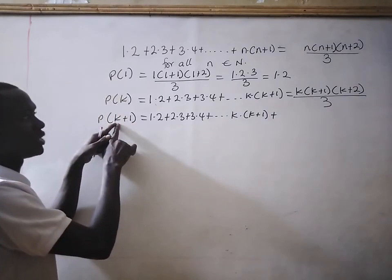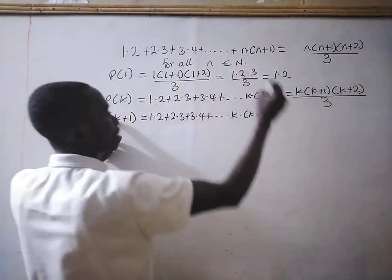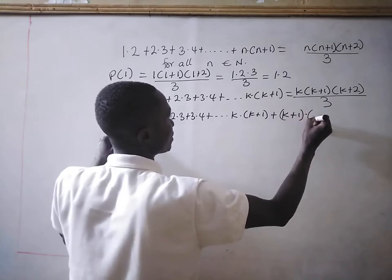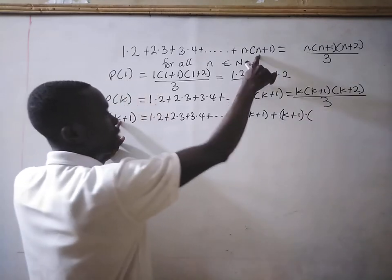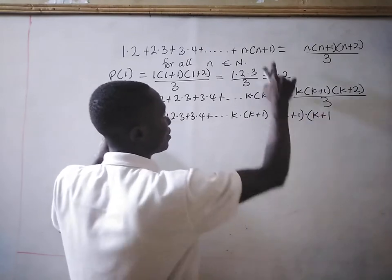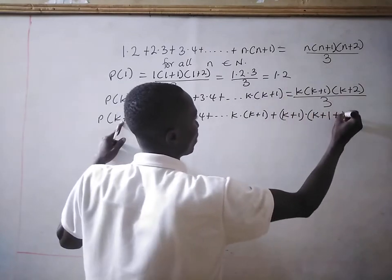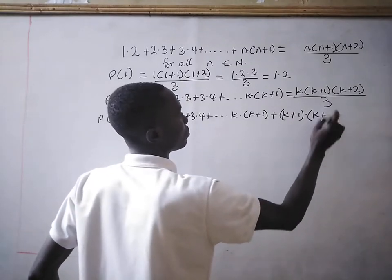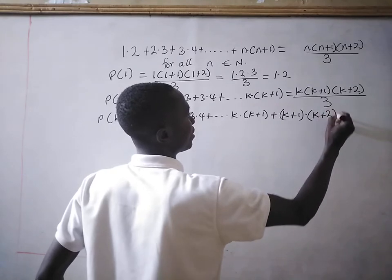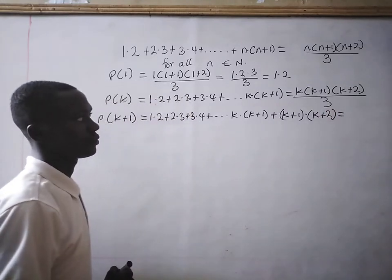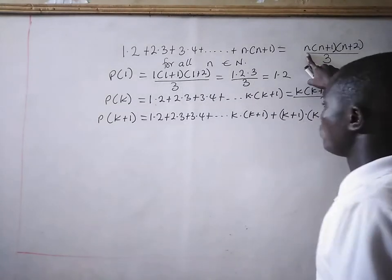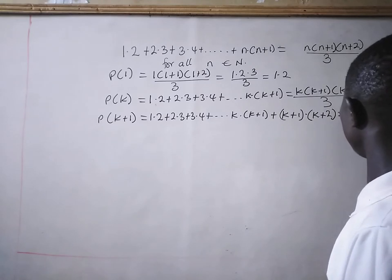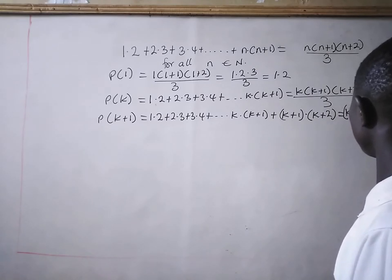Now we are going to put n equal to k+1. That will give us (k+1) times (k+1+1), which is (k+1) times (k+2). So this sum is equal to k×(k+1)×(k+2) divided by 3, plus (k+1)×(k+2). We substitute k+1 wherever we see n.